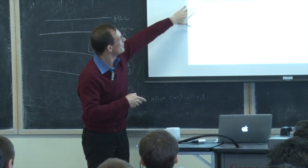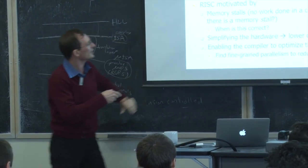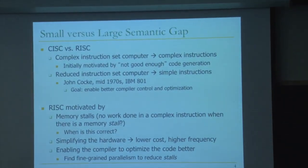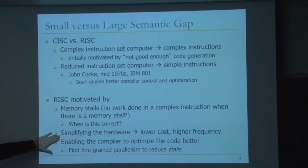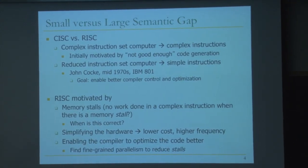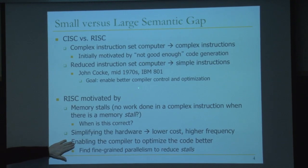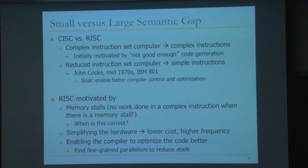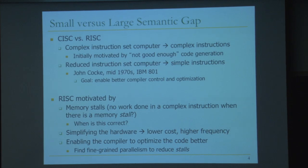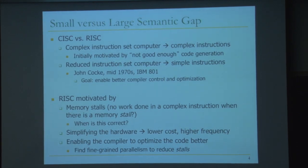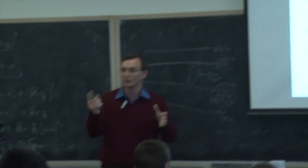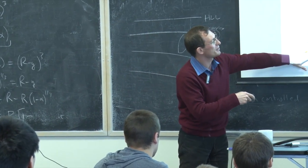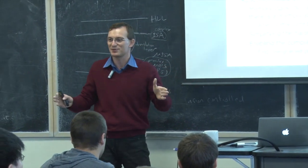There were several motivations for RISC based on CISC architectures. One was simplifying the hardware — a lot of complex instructions, so why not simplify hardware to get lower cost and higher frequency? Another motivation was enabling the compiler to optimize code better. As compiler technology developed, we wanted better compilers to optimize code. If you have a big instruction like repeat-move-s, the compiler cannot reorder it. But if you have smaller instructions, the compiler has the ability to reorder them to get better performance. If you have simpler instructions, the compiler has more control. This enables fine-grained parallelism to reduce stalls.